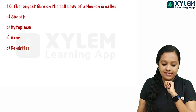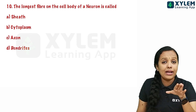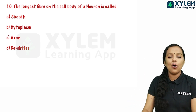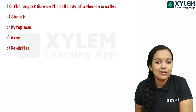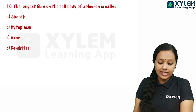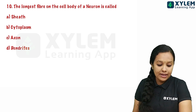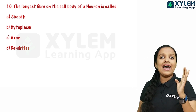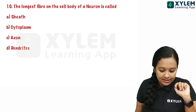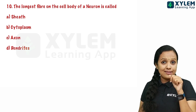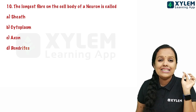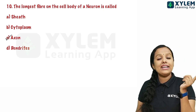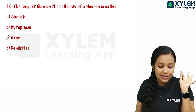The tenth question: the longest fiber on the cell body of a neuron is called — the options are sheath, cytoplasm, axon, and dendrites. The longest filament is the axon and the shortest is the dendron. So the answer is axon.